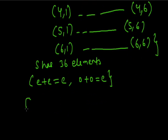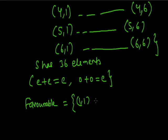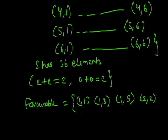Now we will find the favorable outcomes. (1,1) is favorable because both are odd and their sum is even. (1,2) cannot be considered because it is odd plus even. (1,3) we can consider — both are odd. Similarly, (1,5) we can consider — both are odd. When two is on the first die, (2,1) cannot be taken. We take (2,2), (2,4), and (2,6) since all involve even plus even.